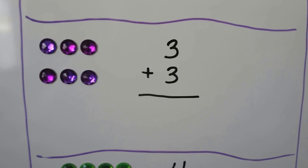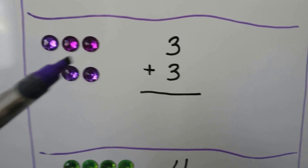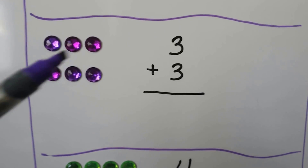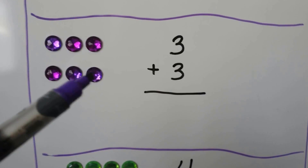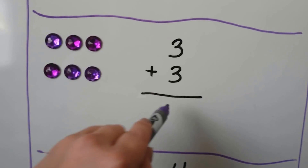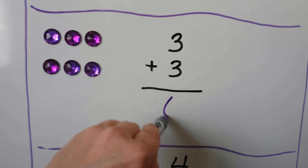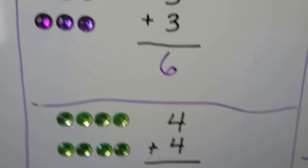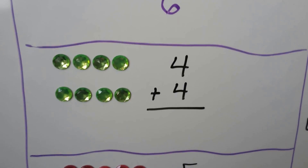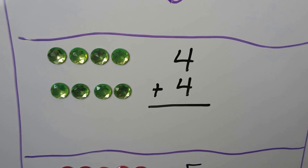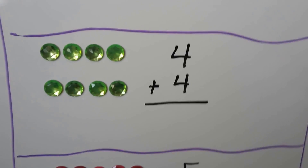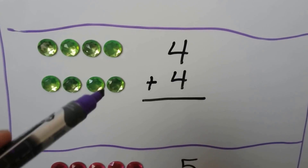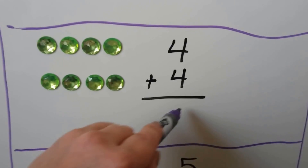3 plus 3. We can count on from the 3: 4, 5, 6. So 3 plus 3 is equal to 6.